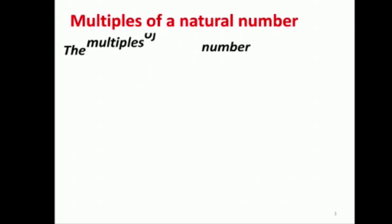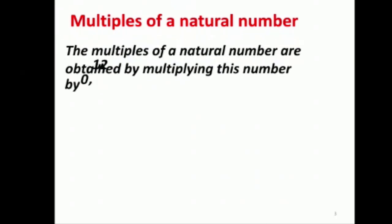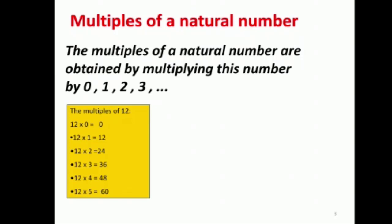Multiples of a natural number: the multiples of a natural number are obtained by multiplying this number by zero, one, two, three, et cetera. يعني لازم يكون معنا عملية ضرب.